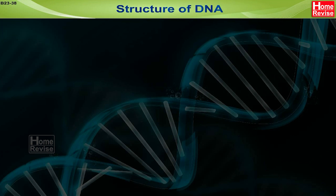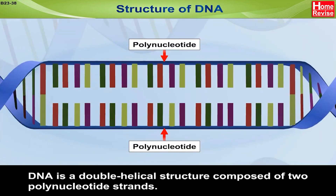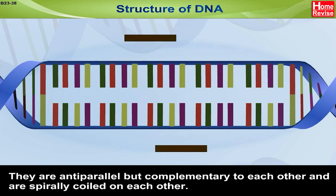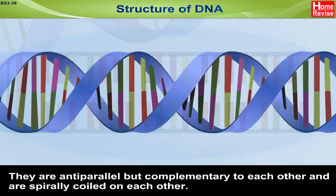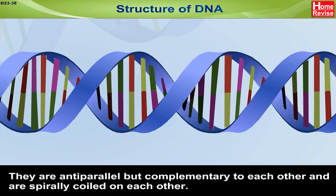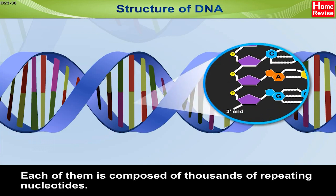Structure of DNA: DNA is a double helical structure composed of two polynucleotide strands. They are anti-parallel but complementary to each other and are spirally coiled on each other. Each strand is composed of thousands of repeating nucleotides.